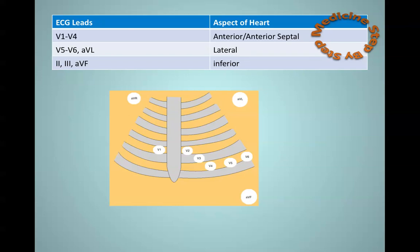If you think about it, this all makes sense. Looking at the diagram showing the positions of the leads on the patient, V5, V6 and AVL are all on the left, so it would make sense that they are looking at the lateral aspect of the heart. Likewise, leads V1 to V4 are more medial and so look at the anterior, anterior septal aspects of the heart.